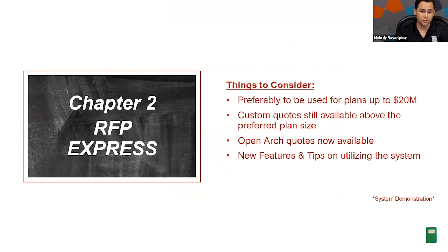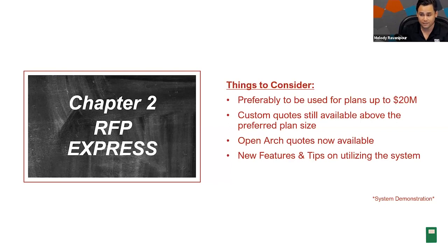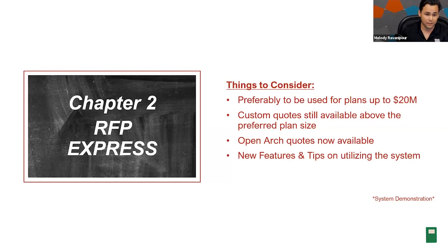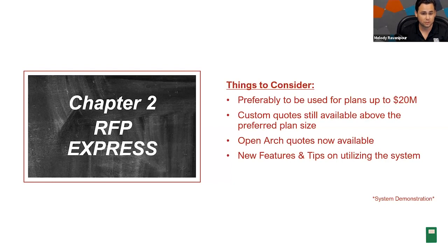This brings us to Chapter 2: RFP Express. Based on the plan fees data, we can see we have wiggle room on record keeping fees, investments, and advisory fees. A few things to consider: RFP Express is preferably used for plans up to $20 million, which is the mark most partners hit for instant quotes. If you're above $20 million, custom quotes are still available, and we now have open architecture quotes available as well.